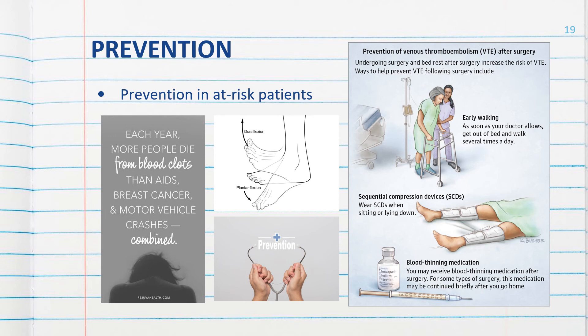Prevention of venous thrombosis is an important component of nursing care for all at-risk patients. To promote venous blood flow from the lower extremities, the nurse should position patients with feet elevated and knees slightly bent, avoid placing pillows under the knees, and avoid positioning patients with hips and knees sharply flexed. Use a recliner chair or footstool when sitting. Ambulate patients as soon as possible and maintain a regular schedule of ambulation. Teach ankle flexion and extension exercises and frequently remind patients to perform them.